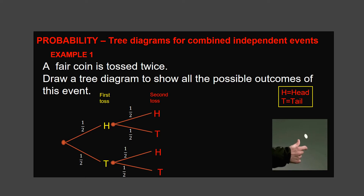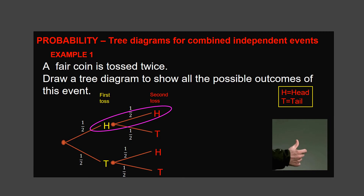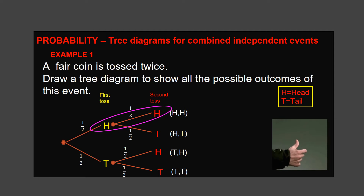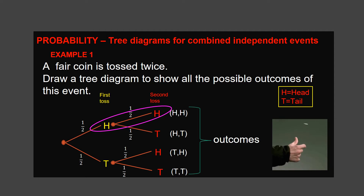When we combine these two events, we get head and head, head and tail, tail and head, and tail and tail. There are four total possible outcomes.